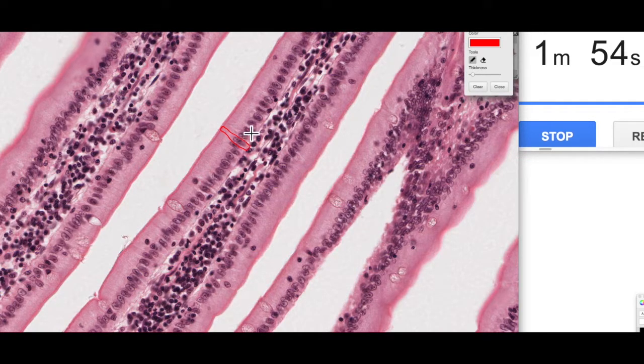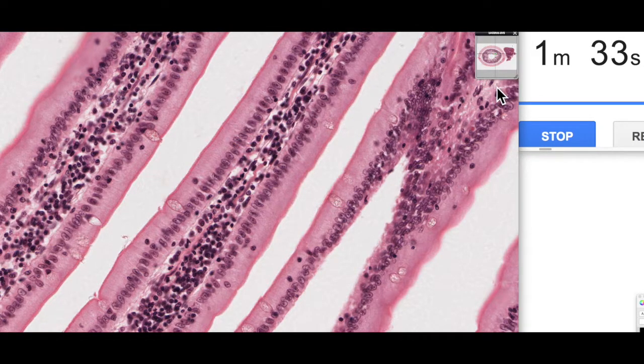You typically get this sort of simple columnar appearance where you want absorption or movement of substances along a surface. So the small intestine, or most of the gastrointestinal tract, is lined by a simple columnar epithelium. And the other area, or the other site where we can actually see a simple columnar epithelium is in the uterine tube.